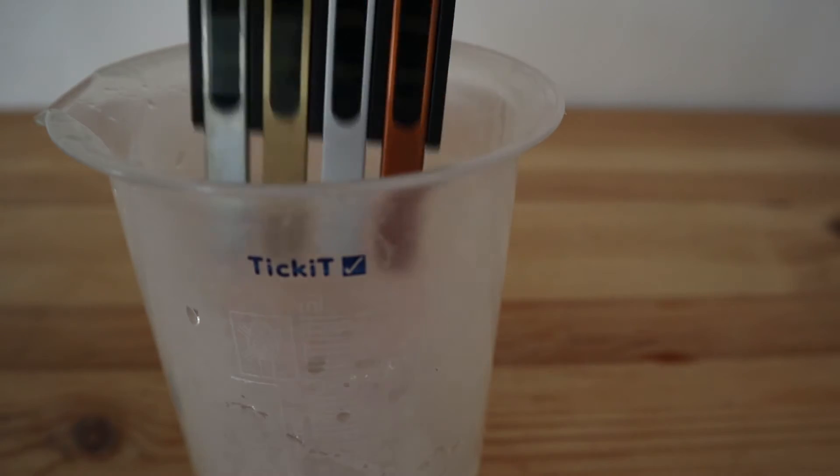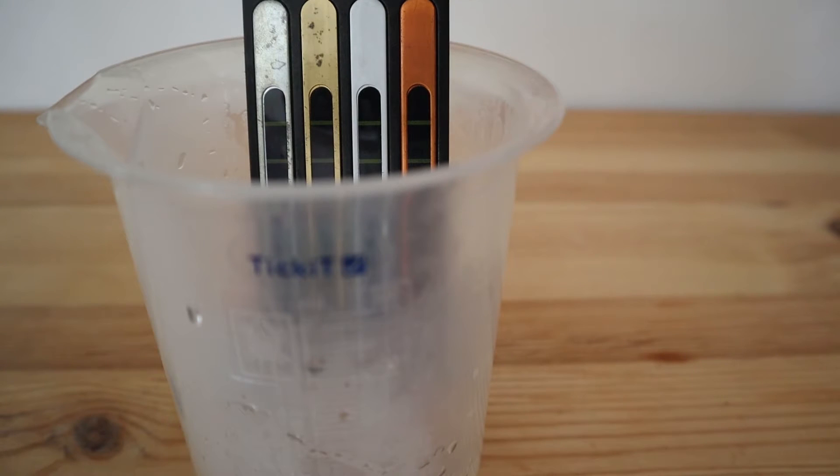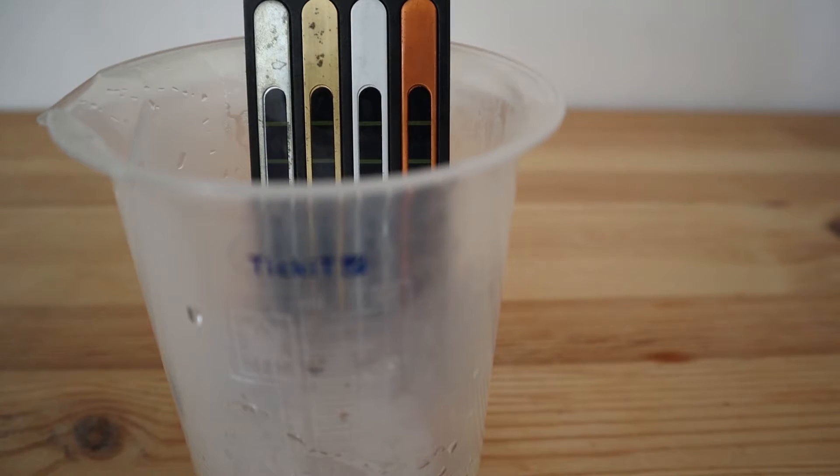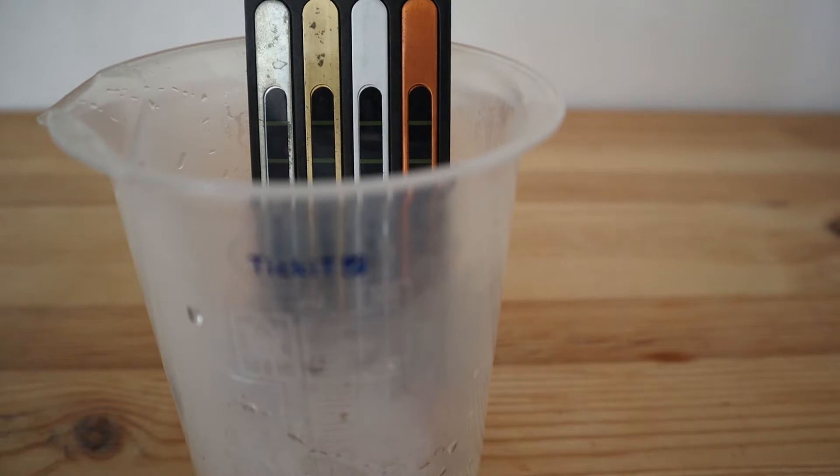Immerse just the bottom ends of these metal bars in the water. As thermal energy is conducted from the water up the metal bars, the thermal sensitive scales will change color.